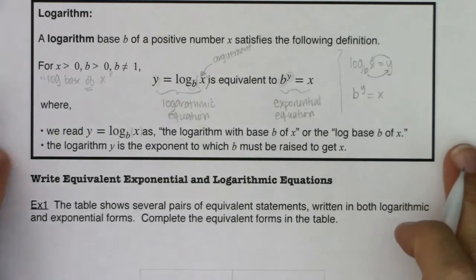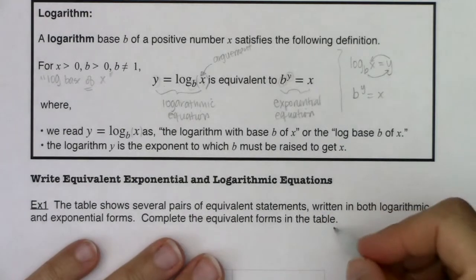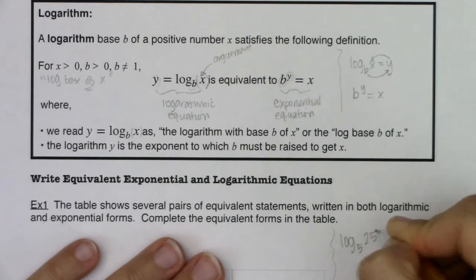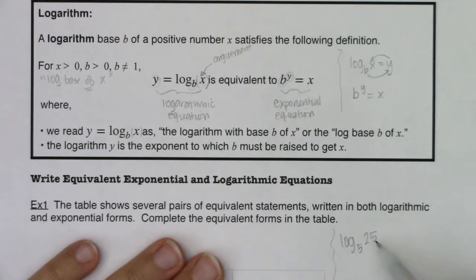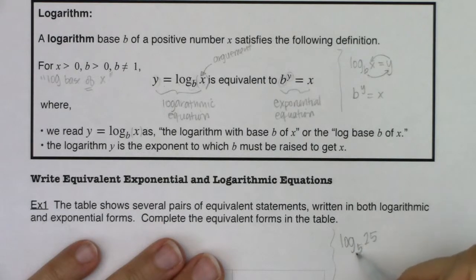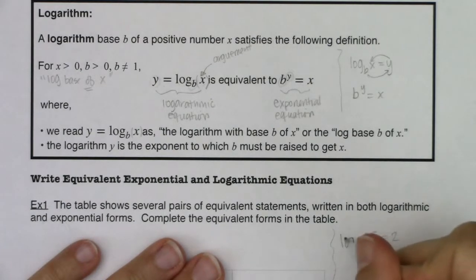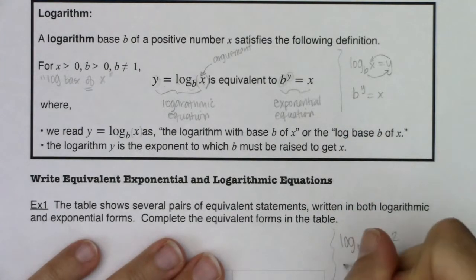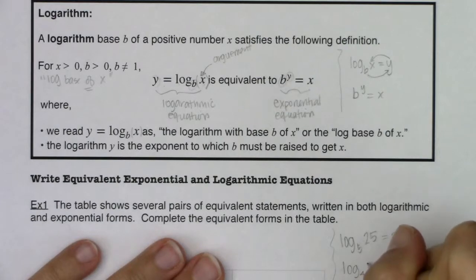Before we get into example one, I'm going to scribble some logarithms on the side to get some feel for this. I know logarithms seem foreign the first time you see them. Take something like log base 5 of 25 — this number collectively is an exponent. It's the exponent you need on 5 to get to 25. What power do I need on 5 to get to 25? I need 2. So log base 5 of 25 equals 2.